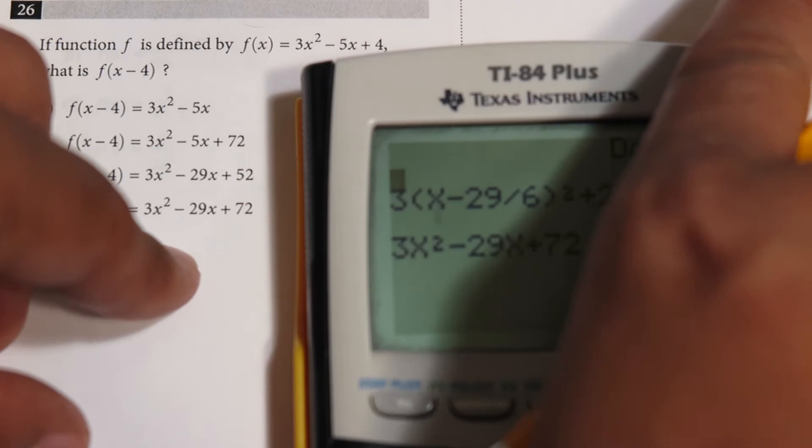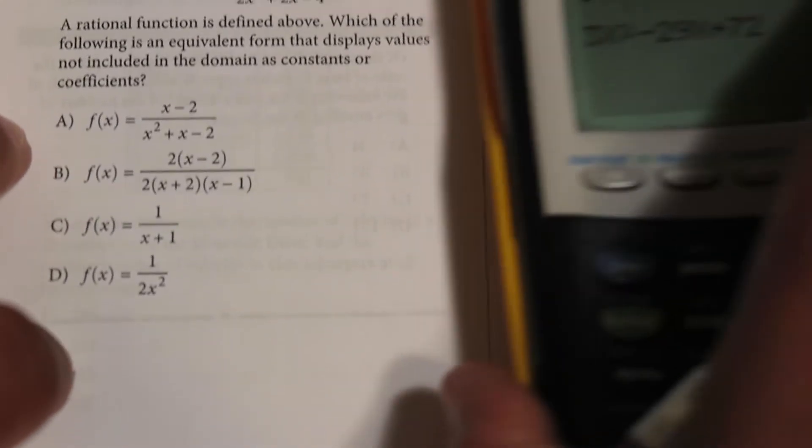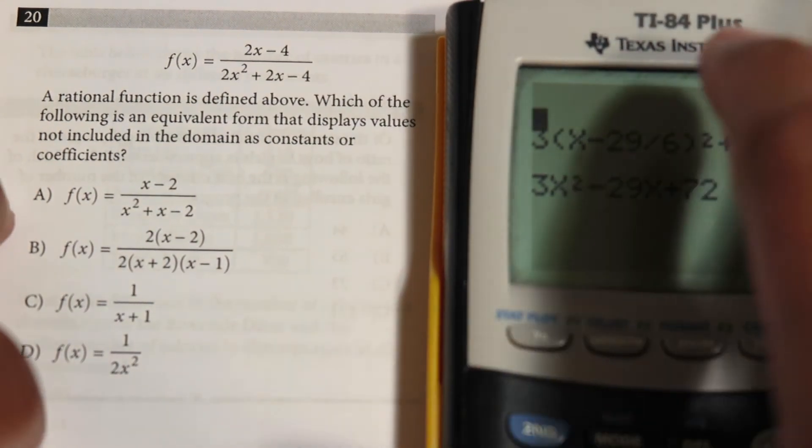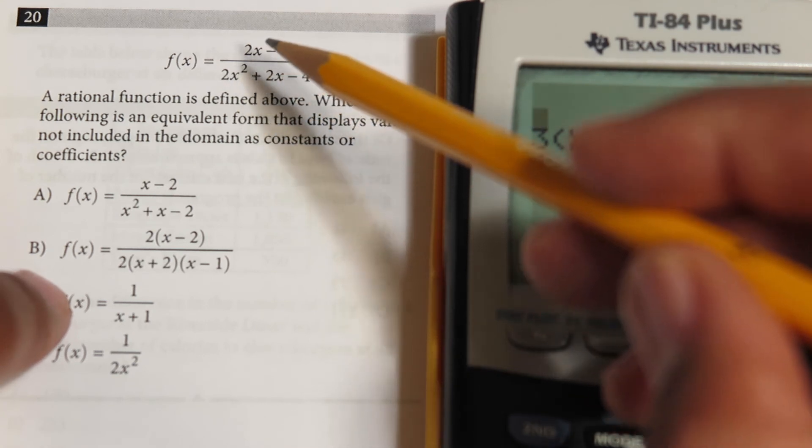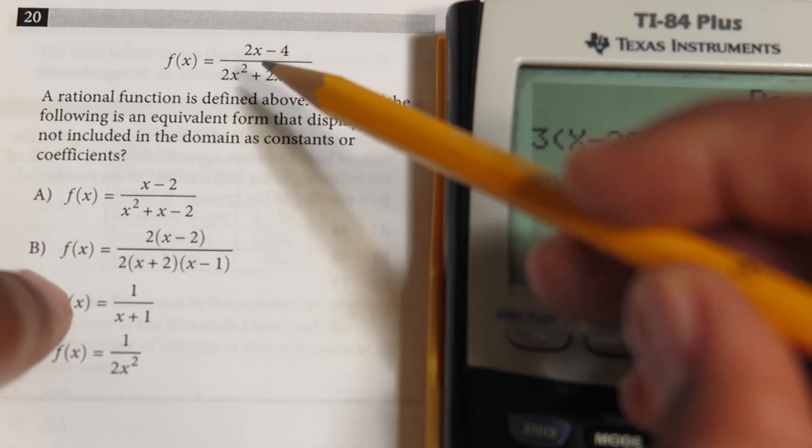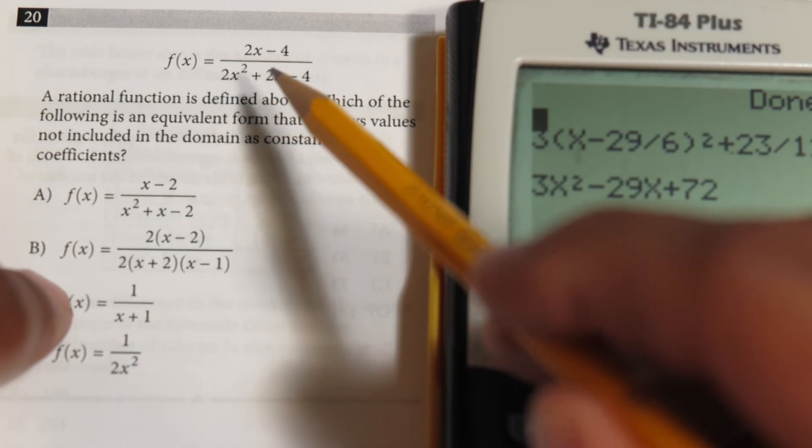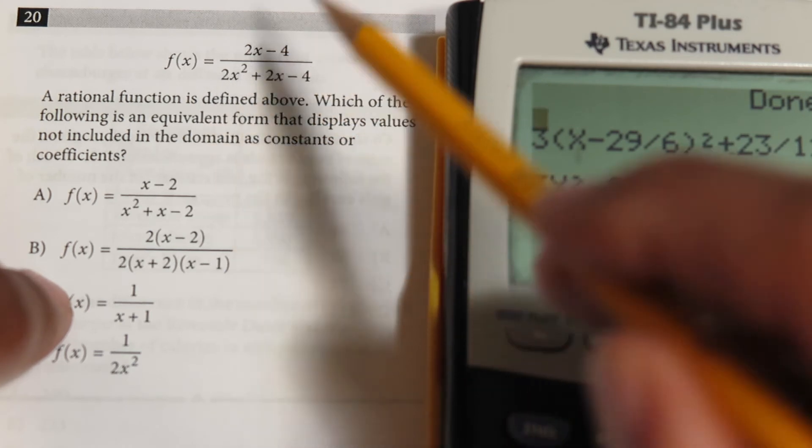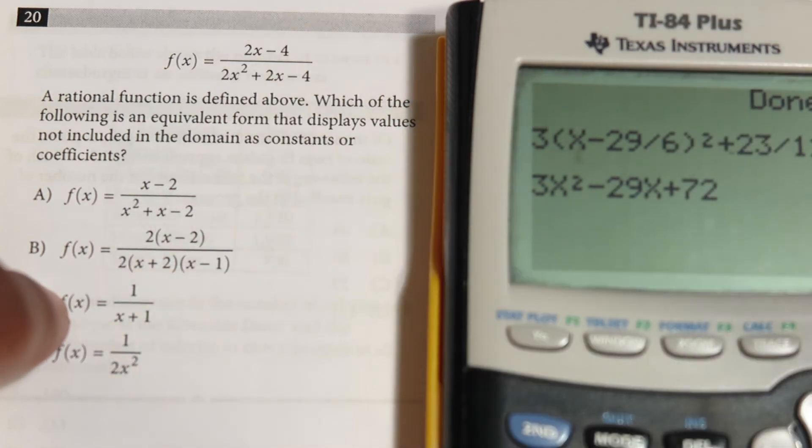That was a good problem to demo. Here's another one that was also on the test. This one's a little easier. They give me a rational function and want you to come up with an equivalent way of writing this function that shows you where the function is no longer defined. That would be basically where the roots are, because the roots would be equal to zero, and you can't divide by zero. But they wanted to be able to look at the function and see that.